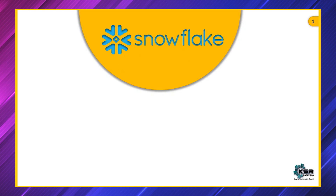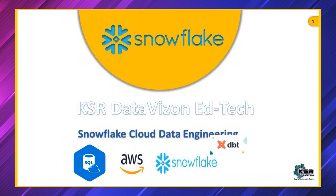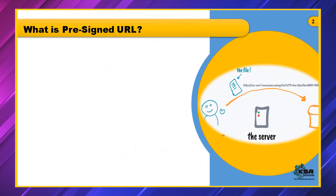Today we are diving into an exciting new feature of Snowflake. The topic we're going to discuss today is pre-signed URL. A lot of people would have already heard what a pre-signed URL is, as provided by AWS. Let's try to understand what pre-signed URL means, and then we will go into what to do with this pre-signed URL in Snowflake.